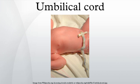Development and Composition: The umbilical cord develops from and contains remnants of the yolk sac and allantois. It forms by the fifth week of fetal development, replacing the yolk sac as the source of nutrients for the fetus. The cord is not directly connected to the mother's circulatory system, but instead joins the placenta, which transfers materials to and from the mother's blood without allowing direct mixing. In a full-term neonate, the cord is usually about 50 cm long and about 2 cm in diameter, with this diameter decreasing rapidly within the placenta.